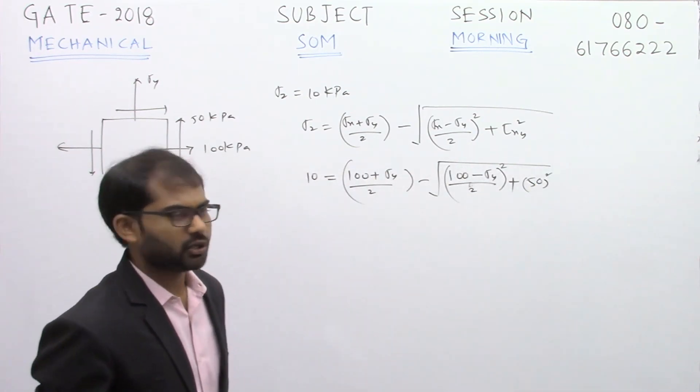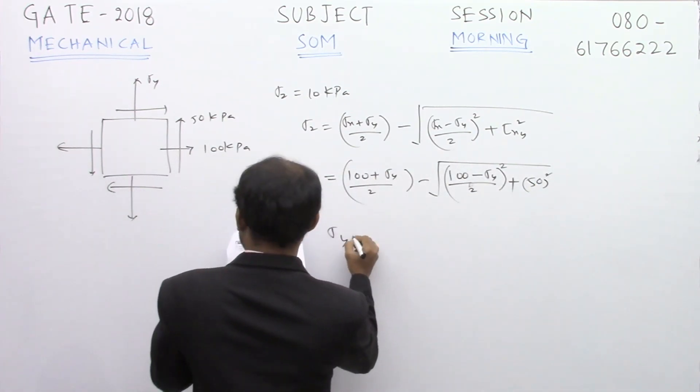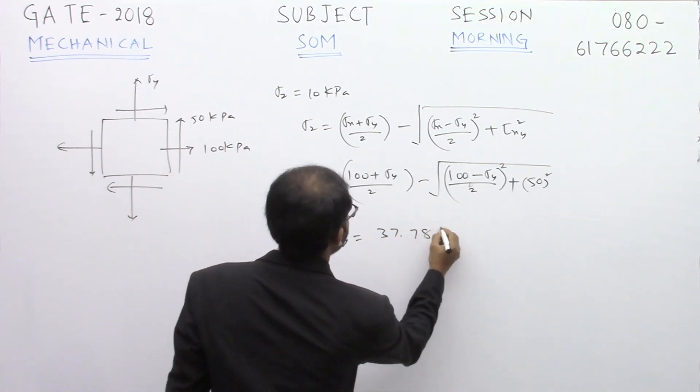You simplify this equation, you should be getting the value of sigma y as 37.78 kilopascal.